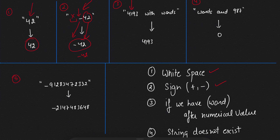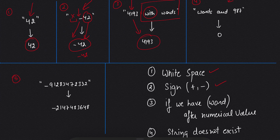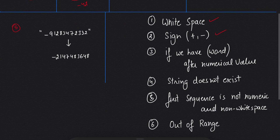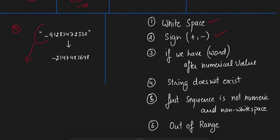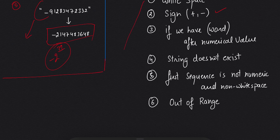In example three, we check for whitespace — we don't have it. Then we check whether it has a sign — it doesn't. Then we check whether the first sequence is a numerical value — yes it is. We convert it, and after that we see a non-numerical value which we ignore, and we simply return 4193. In example four, there's no whitespace, no sign, and the very first character is non-numerical and non-whitespace, so we return zero. In example five, the number is clearly out of range so we return minus 2 to the power 31.